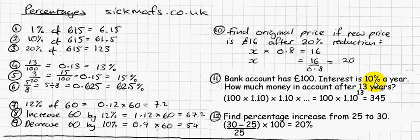The bank will give me 10% of whatever I've got in the account, because they mess around with my money and for that privilege they give me 10%. So what is 10% of £100? It's £10. After one year of keeping £100 in the bank account, I get a £10 thank you.